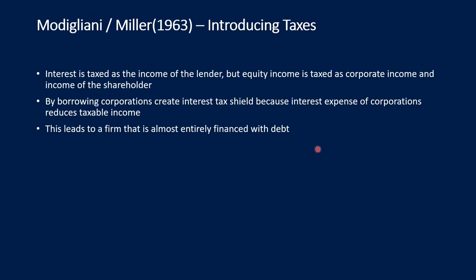In 1963, Modigliani and Miller wrote another article introducing taxes. The problem is that interest is taxed as income of the lender, while equity income is taxed as corporate income and shareholder income. This difference in taxation between interest and equity income means that by borrowing, corporations create an interest tax shield, because interest expense reduces taxable income.